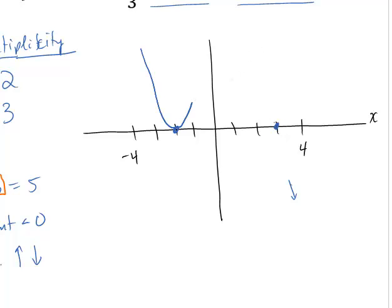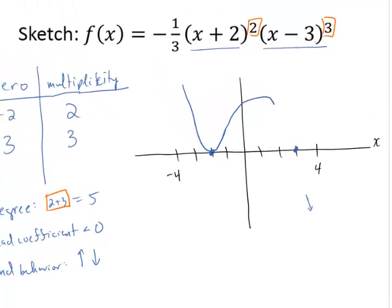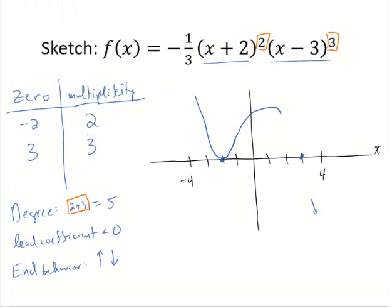Now it's got to come back down and hit that other x-intercept. So it's going to probably go up for a little while and then come back down. Now, what happens at 3? Since we have a multiplicity of 3, which is odd, the curve will pass through the intercept. But since it's greater than 1, the curve will flatten out some as it passes through.